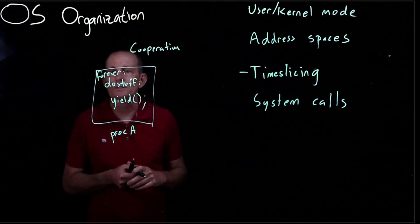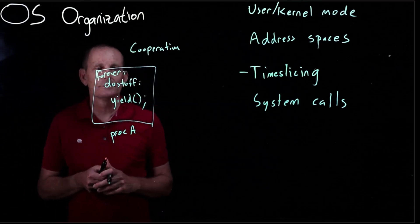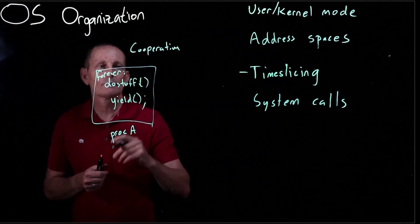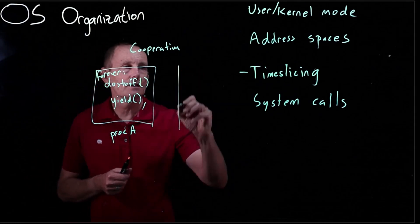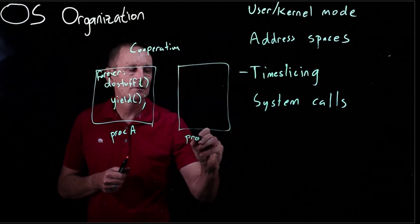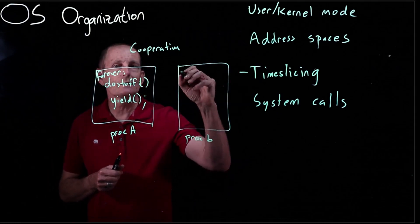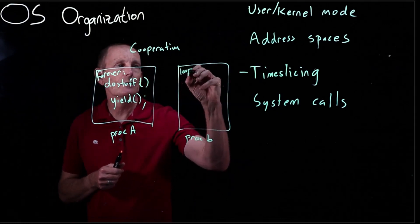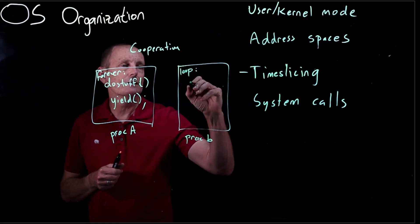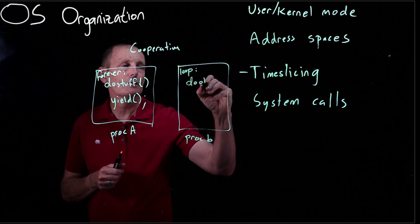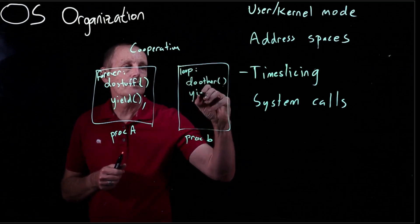So let's say that's in a loop where it's doing stuff and then calling yield. And process B again has this loop where it is doing other stuff and then calling yield.